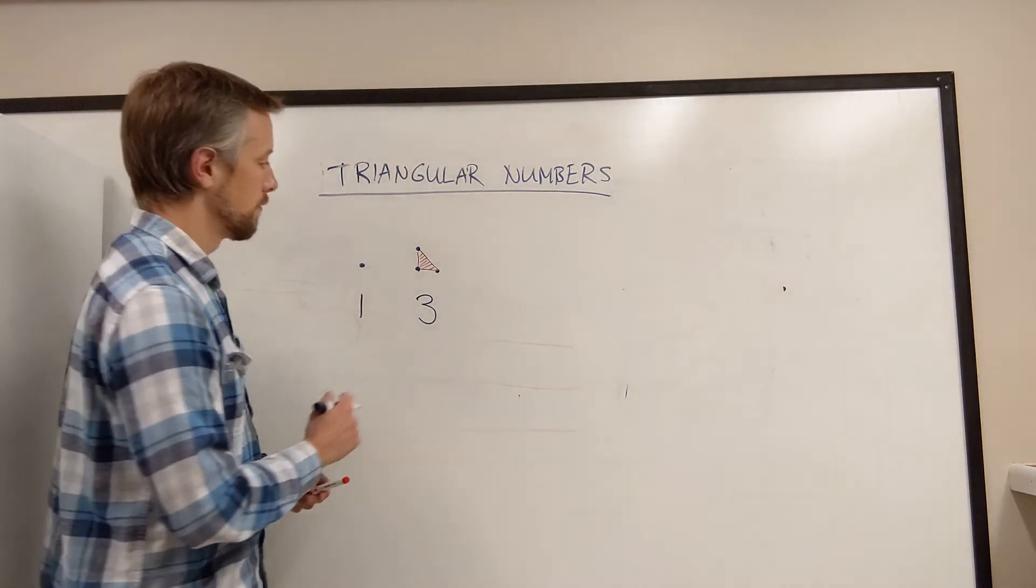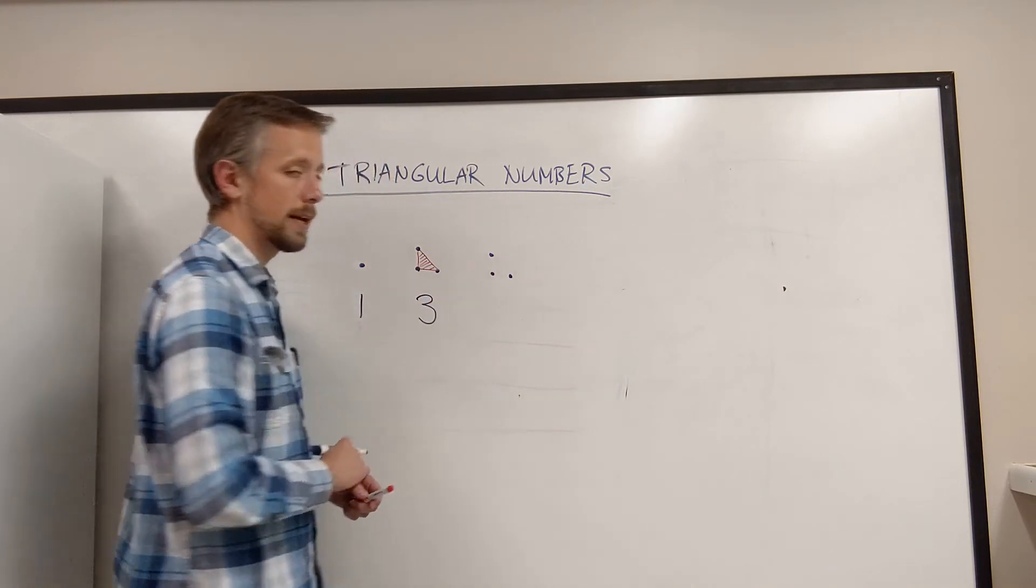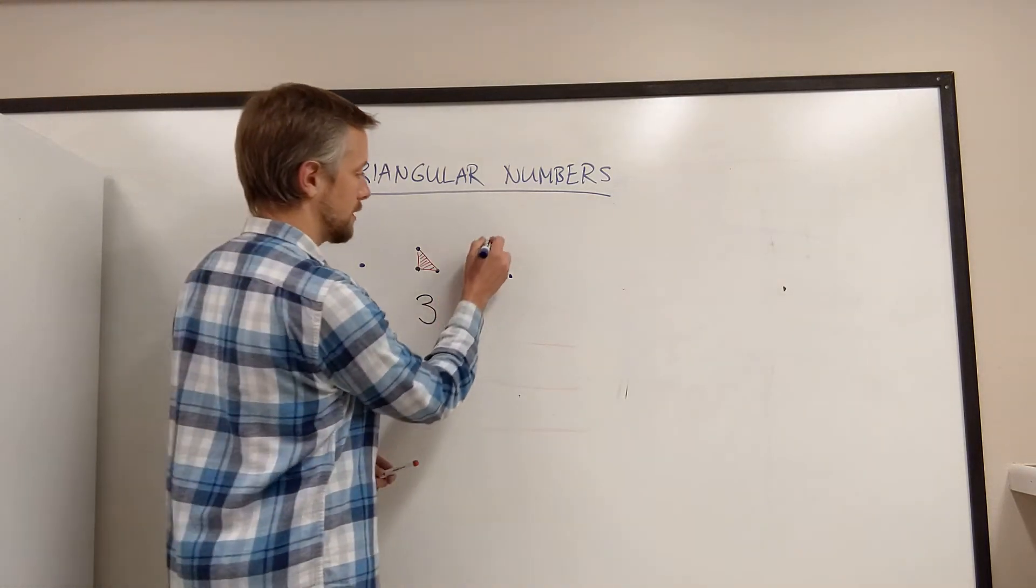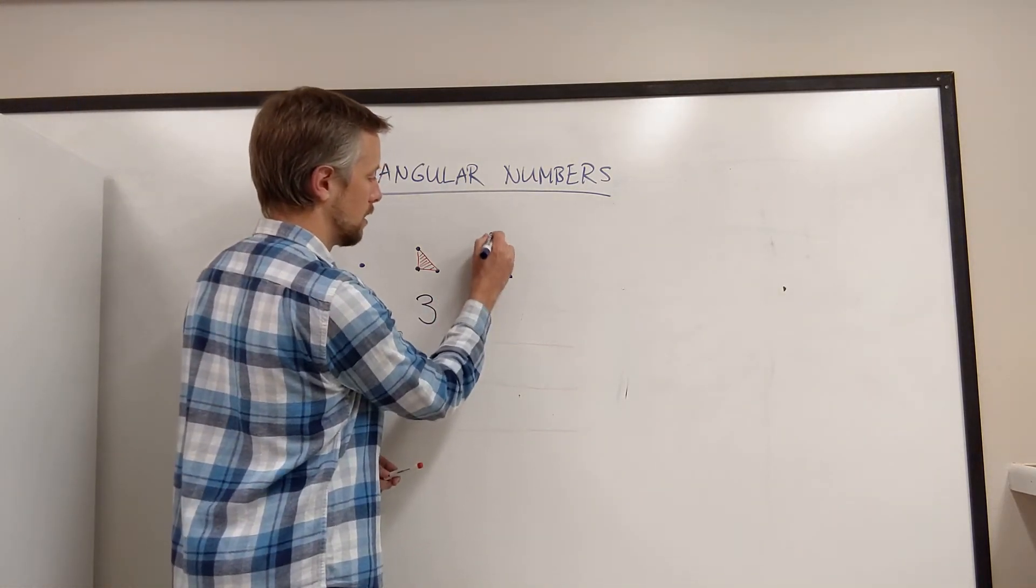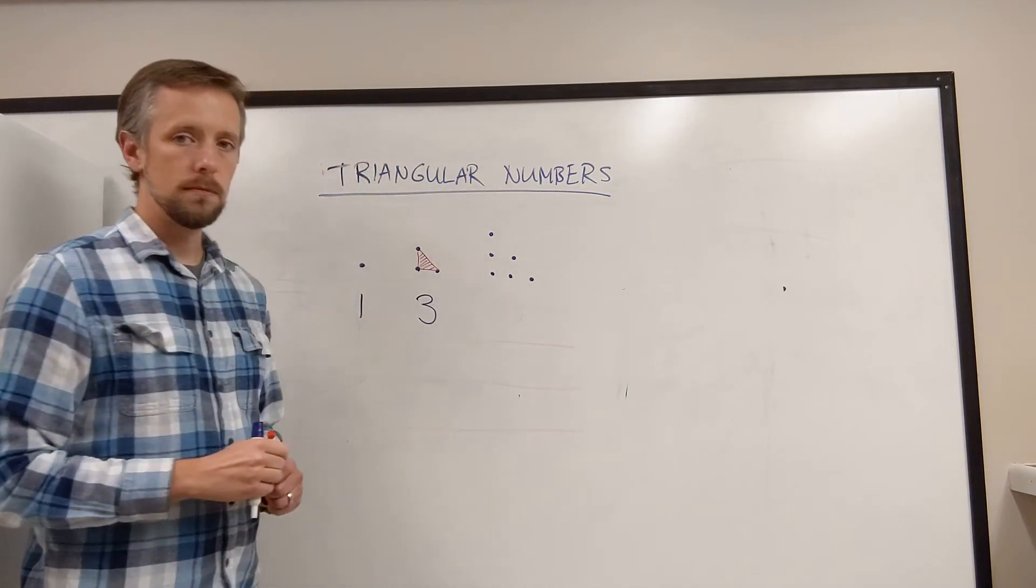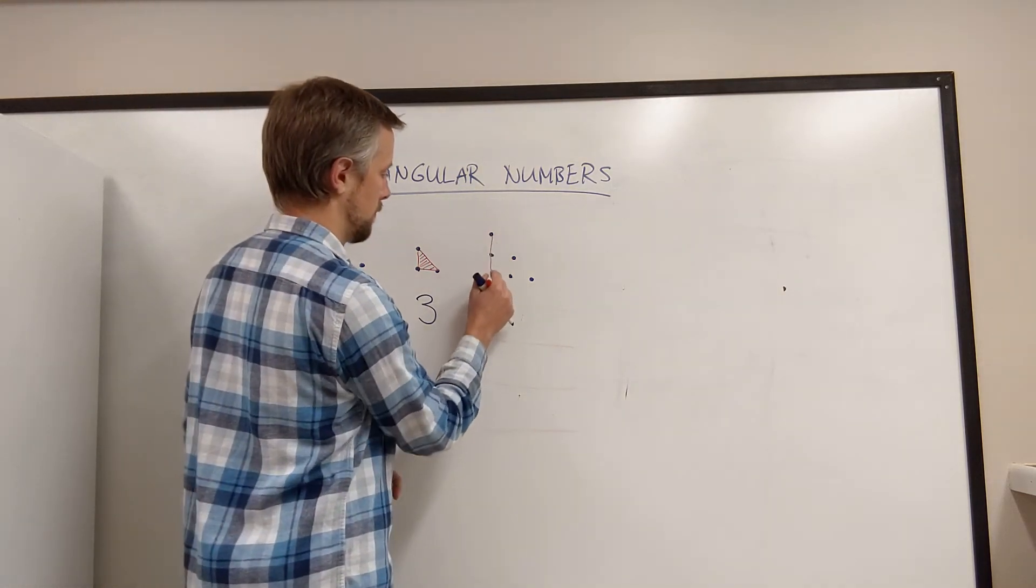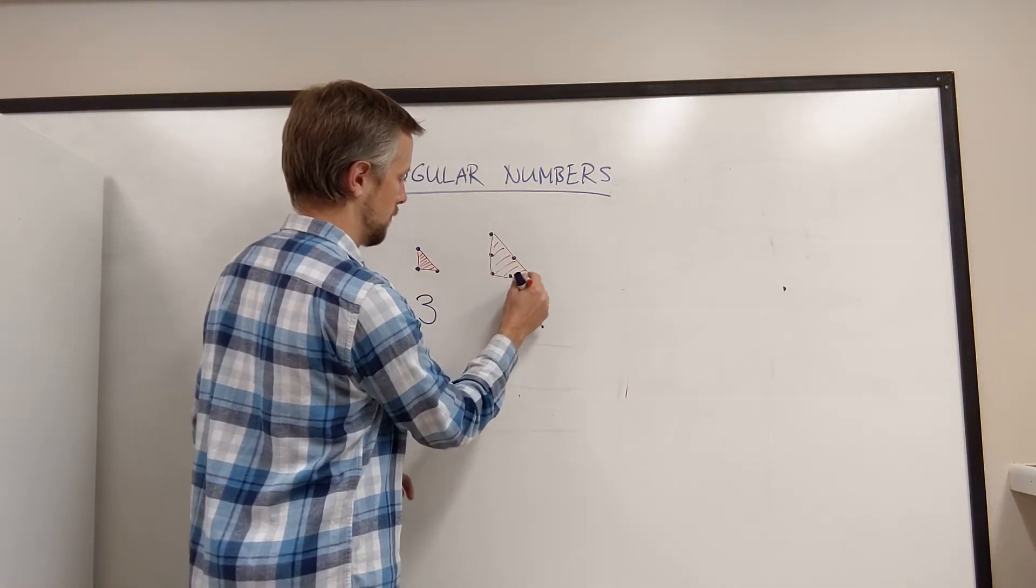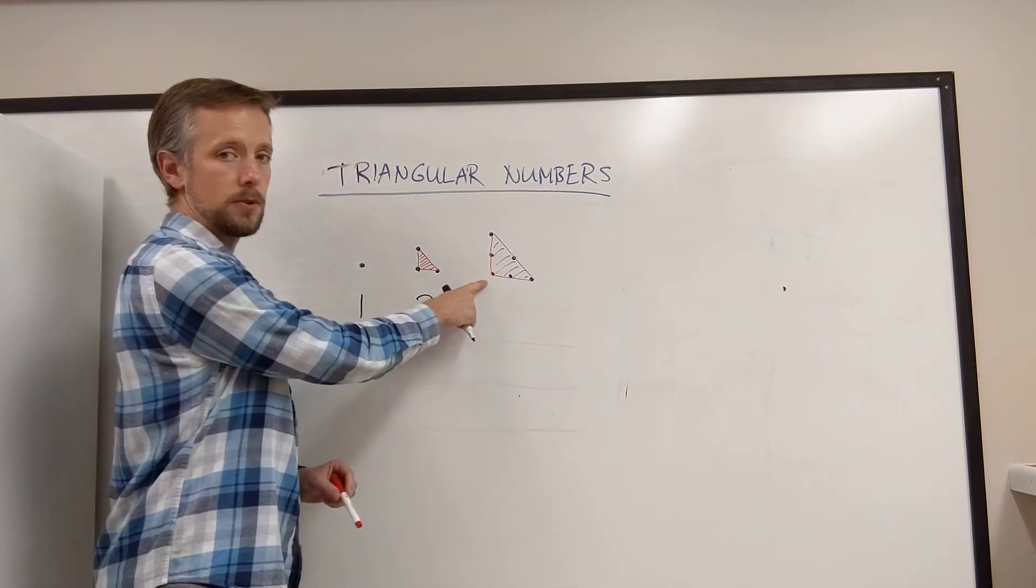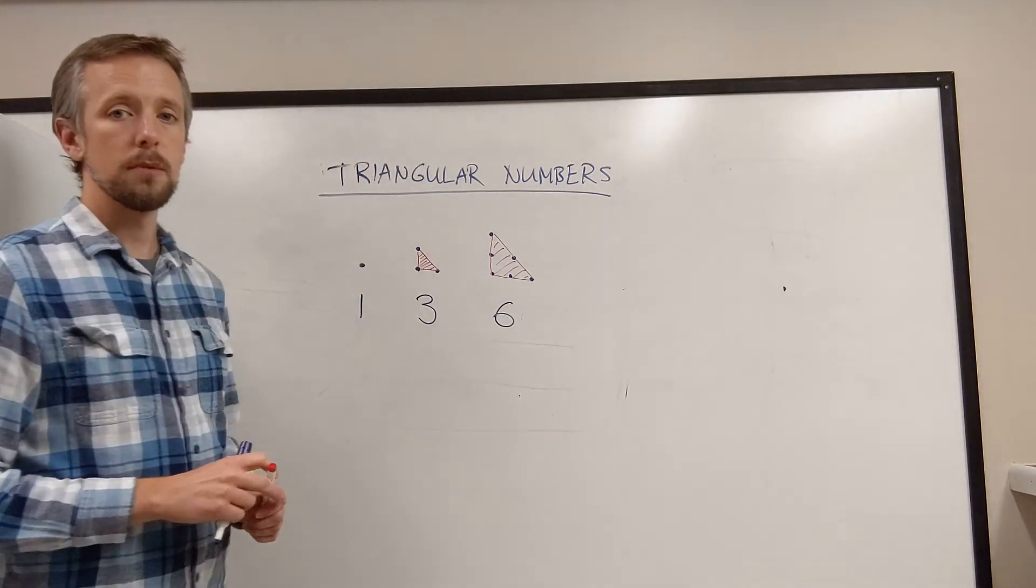Okay. For the next triangular number, this is what I'll do. I'm going to start with the 3 dots I had before, and I'm going to add 3 more dots along this diagonal here. Do you see how that makes another triangle? To make this, I used 6 dots in total, so the 3rd triangular number is the number 6.